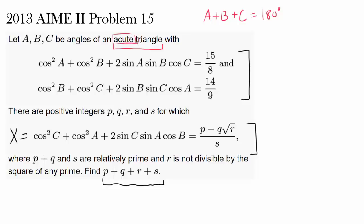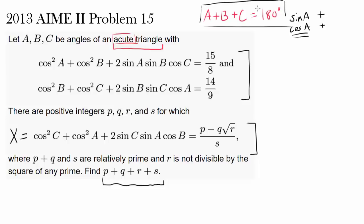How is the acute condition helping us? It's not very obvious right now, but since all angles are acute, we know sine of A, sine of B, and sine of C are all positive. The same applies for cosine — we don't have to worry about cosine of A being negative. And of course, A plus B plus C equals 180 degrees is immensely important.